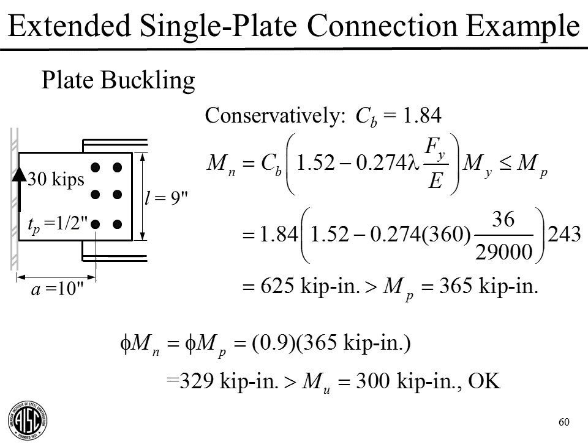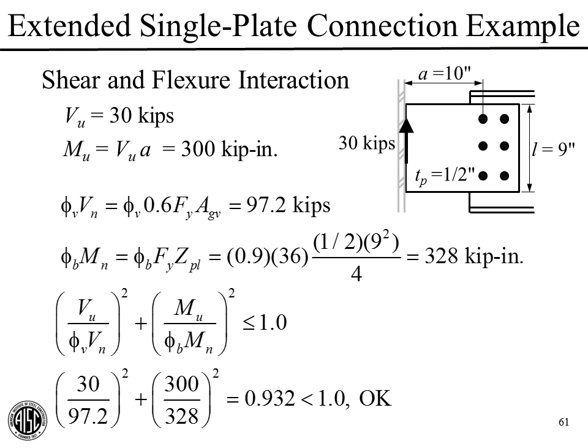Now for shear and flexure interaction. V sub U is 30 kips, M sub U is 300 kip-inches. Phi × V_N for shear yielding was calculated as 97.2 kips. Phi × M_N is phi times M_P, giving 328 kip-inches. Plugging into the inequality, we get 0.932, which does not exceed 1.0. The shear and flexure interaction is satisfied.